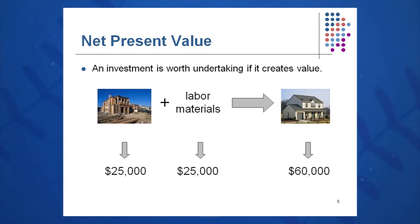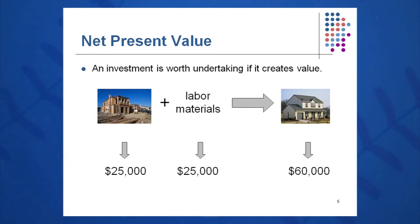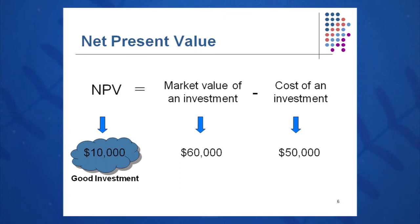NPV is the first method we'll talk about. An investment is worth undertaking if it creates value. For example, if you put twenty-five thousand dollars into land and twenty-five thousand into labor and materials, build a house in three to six months, and sell it for sixty thousand dollars, that's a positive NPV project — market value of sixty thousand, cost of fifty thousand, NPV of ten thousand. The general rule: positive NPV means accept; negative NPV means reject.